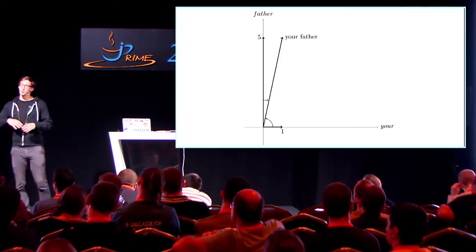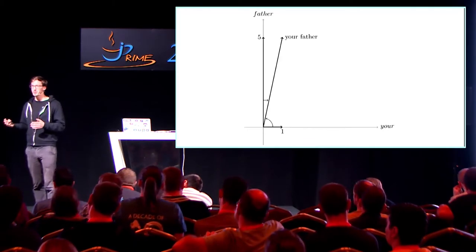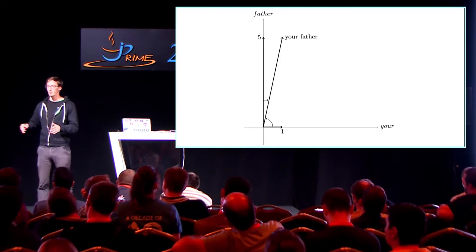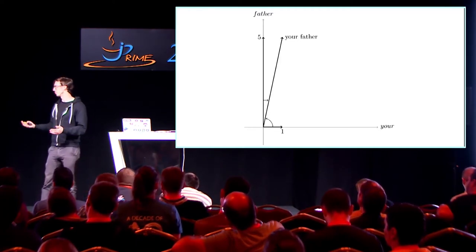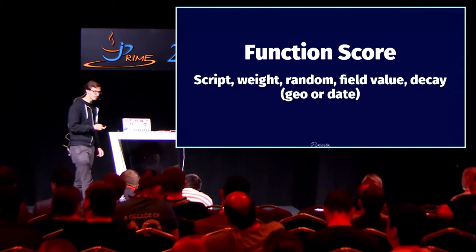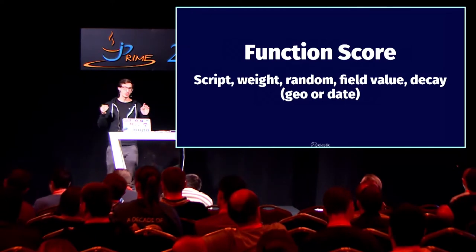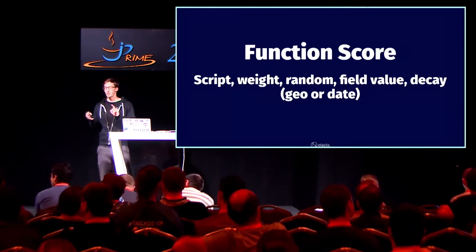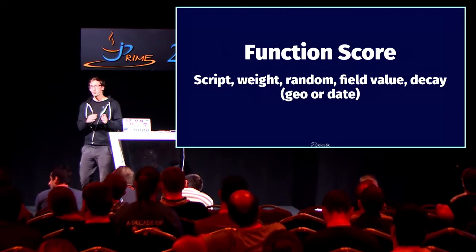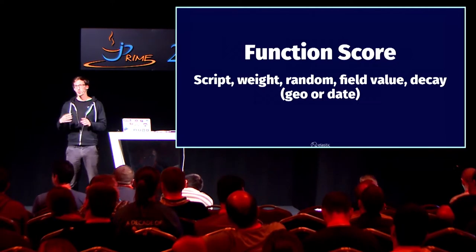That is the vector space model. A two-dimensional space is very easy to draw. If you have three terms it would be three-dimensional, et cetera. That is generally the concept. You can totally change that — you can use scripts, you can use randomization, you can use decaying functions. There are lots of ways to change that score depending on what you want to do.